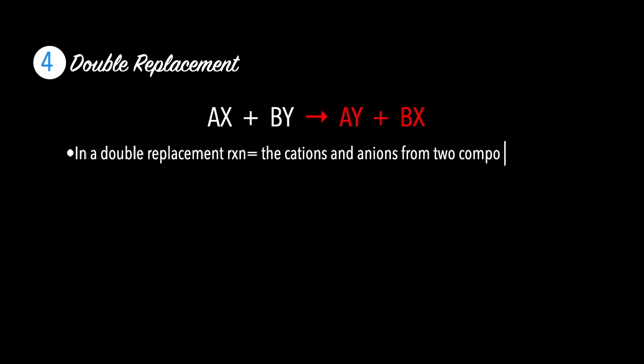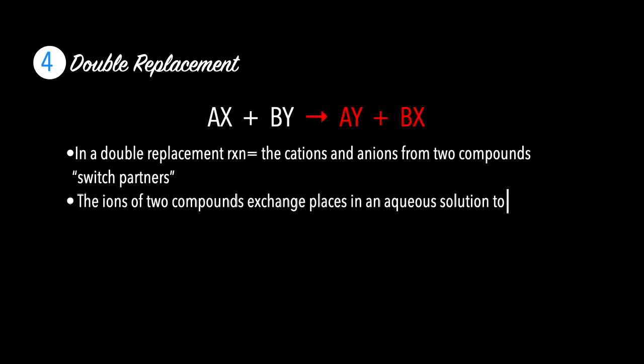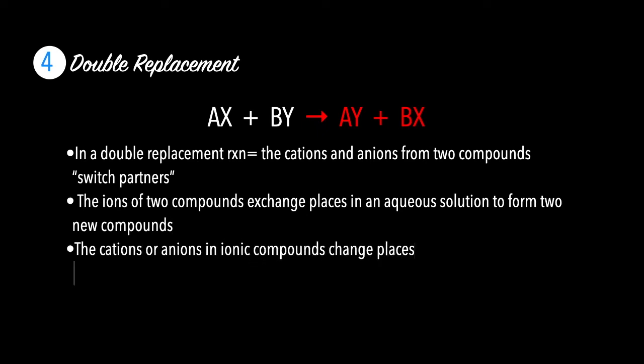Number four, double replacement. Double replacement has the following format: AX plus BY gives you AY plus BX. In a double replacement reaction, the cations and anions from two compounds switch partners. The ions of two compounds exchange places in an aqueous solution to form two new compounds. The cations or anions in ionic compounds change places. Cations are replaced by cations or anions are replaced by anions.